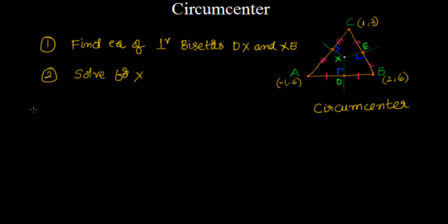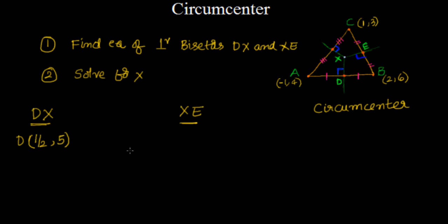For solving DX, the coordinates of D are the midpoint of A and B: (−1 + 2)/2 = 1/2, and (4 + 6)/2 = 5. So D = (1/2, 5). Similarly, the coordinates of E, the midpoint of BC, are (2 + 1)/2 = 3/2, and (6 + 3)/2 = 9/2. So E = (3/2, 9/2).